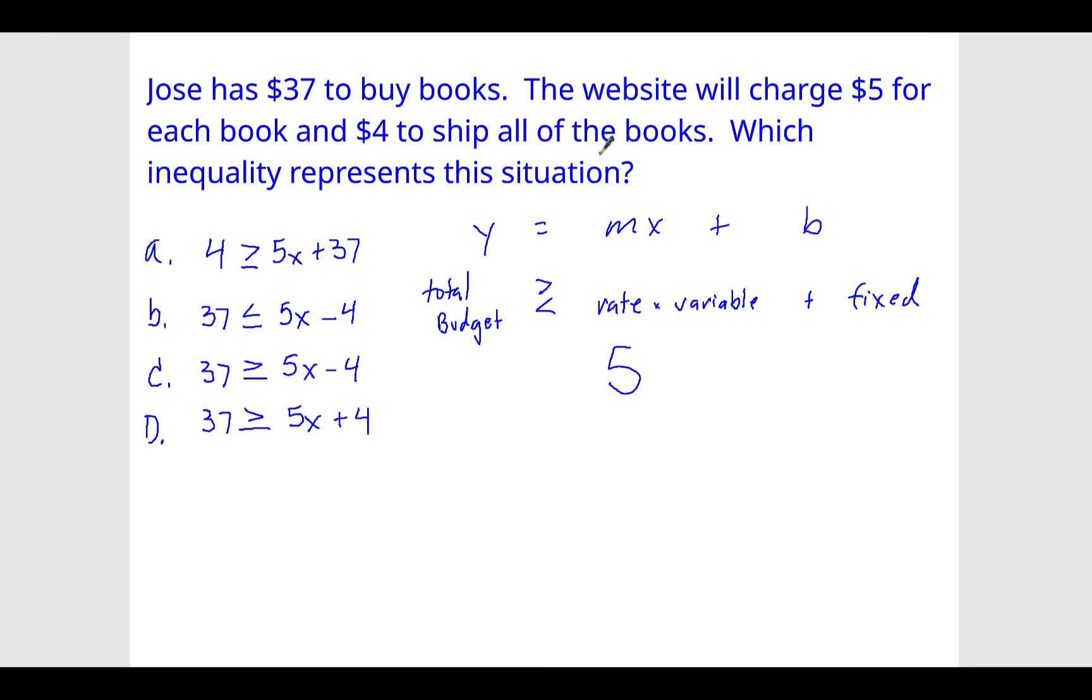And $4 to ship all the books. So they don't use a word, but if he's shipping all the books, however many he purchases, that's a fixed amount. And so again, was $37 the total or is $37 the variable amount? And it's going to be $37. The variable amount is x. That's what we're trying to solve. It's the number of books that he can purchase.